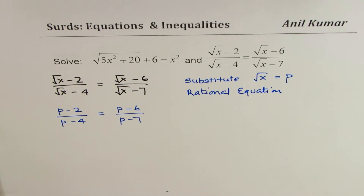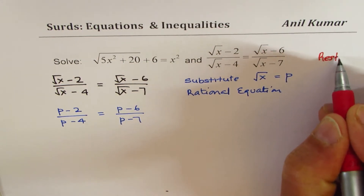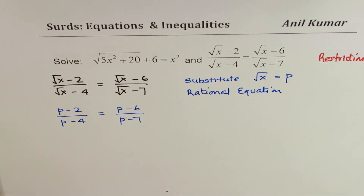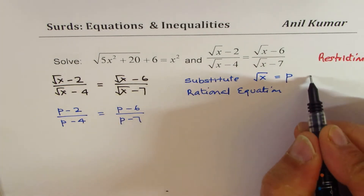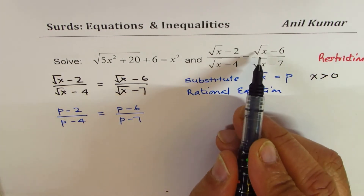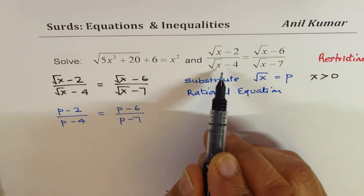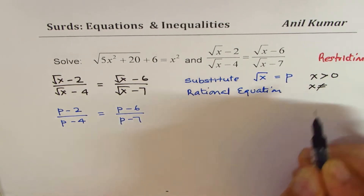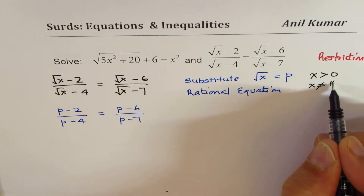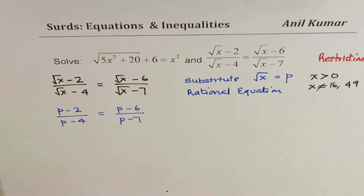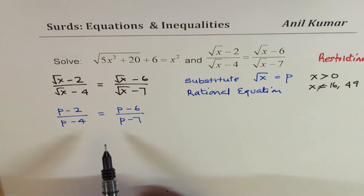Another important thing to look into these equations is always restrictions. In this particular case, x has to be greater than 0 for √x. Also, the denominator cannot be 0, so x ≠ 16 and x ≠ 49. These cannot be part of your solution.